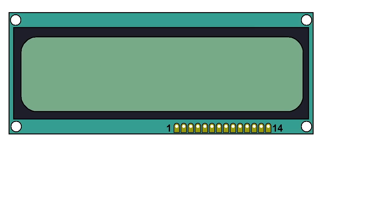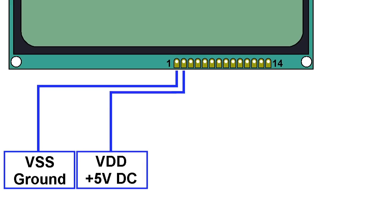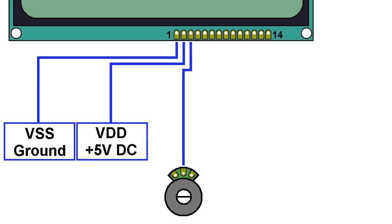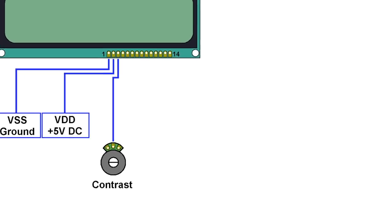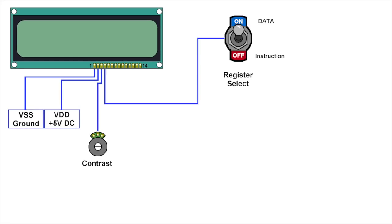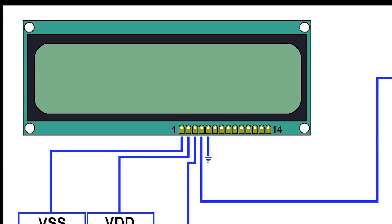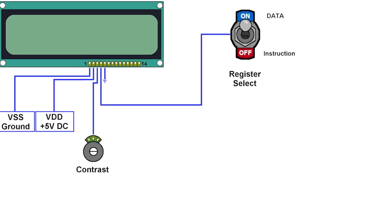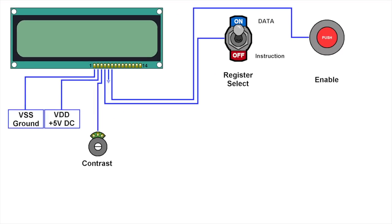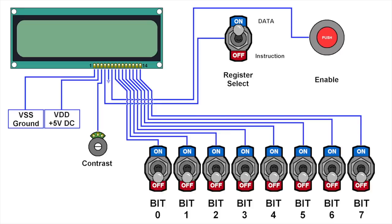I played around with my design on a paint program and this is what I came up with. I'll connect the two power pins to power and ground, this one for contrast, a toggle switch for the register select. The read/write pin will go straight to ground because I'm only going to be writing data. I'll use a push button on the enable line, and then 8 toggle switches for the data lines.